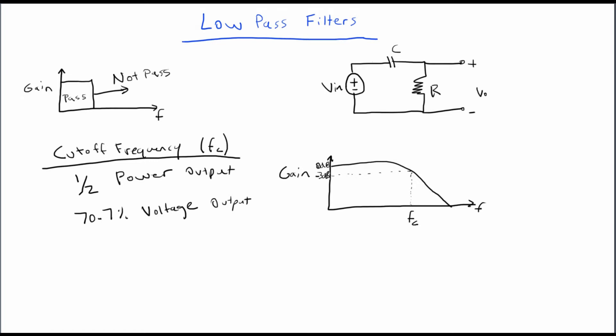As soon as I hit negative 3 dBs, I know at this point here I'm actually at half power, or roughly 70% voltage output.